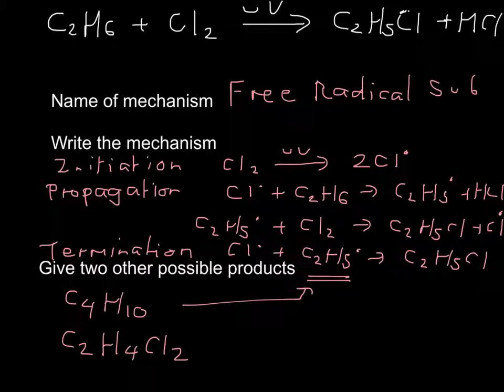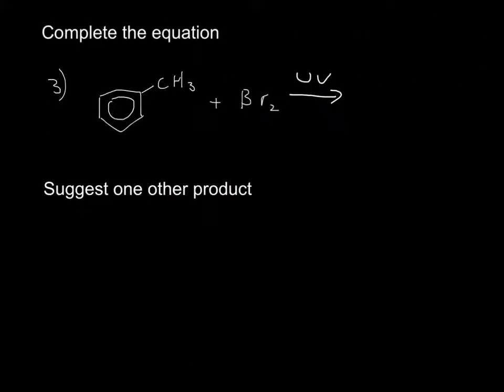Let's move on to the next question. So this is slightly more difficult. It wants me to complete the equation. You can see you've got a benzene ring there, you've got bromine and UV light. Now as you know, because you know benzene chemistry so well,